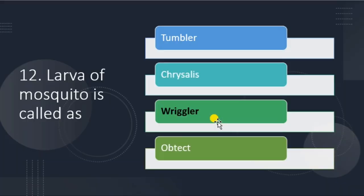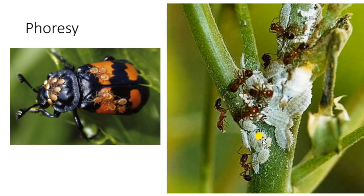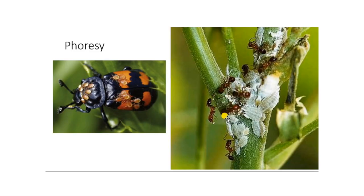Transport of flightless insects by other insects is called what? Ballooning is when young larvae are blown on silken threads by the wind — for example gypsy moth larvae and spiderlings produce silken threads and are transported by wind. The transport of flightless insects by other insects is called phoresy. For example, mealybug nymphs cannot travel long distances and are transported by black ants. Mealybugs produce honeydew — a sugary substance — to attract ants. The mealybug benefits from the ant by getting transport, and the ant benefits by feeding on the honeydew.